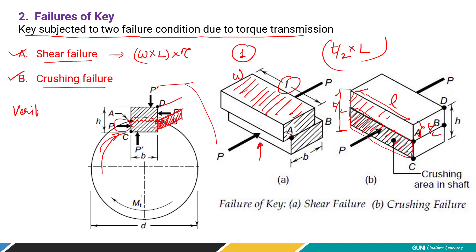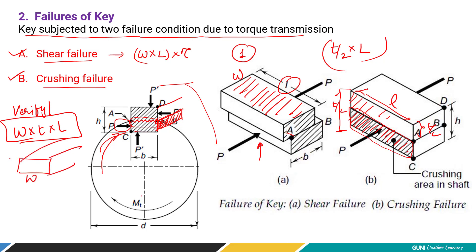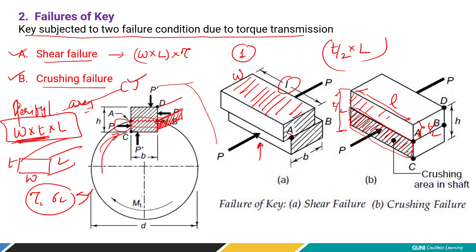We have to verify that width, thickness, and length are such that they do not induce shear stress or crushing stress beyond the permissible limit. If they do, we must increase the dimensions. In key design we ensure that the adapted dimensions are safe by verifying the induced stresses. Alternatively, if permissible stresses are given, we can find w and t.